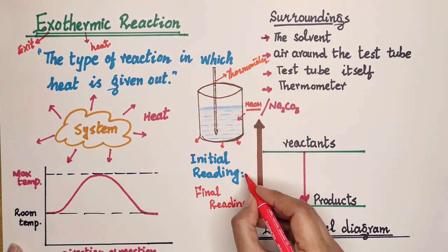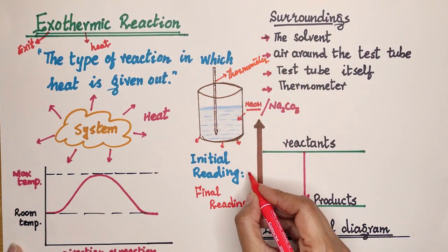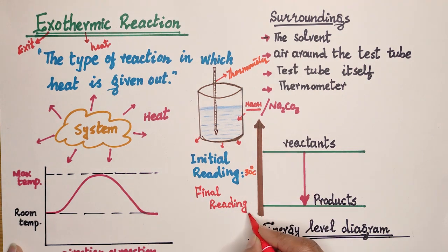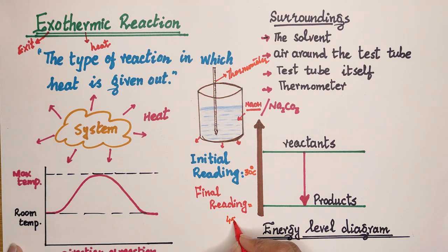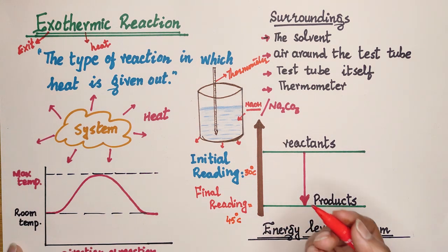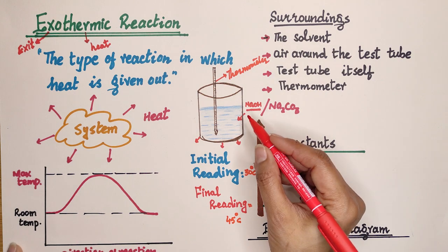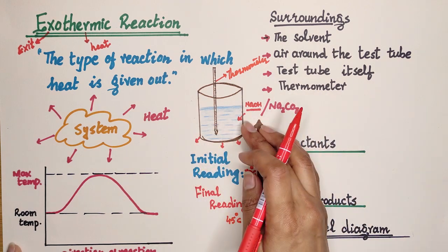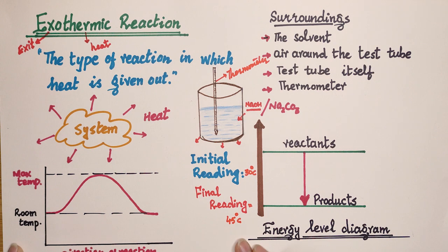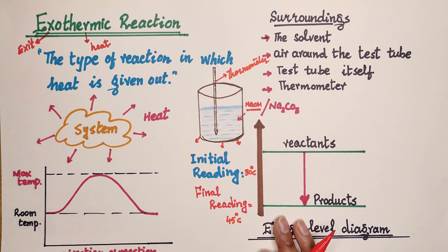The thermometer proves helpful in confirming the reaction is exothermic. For example, if the initial reading is 30°C and after the reaction it is 45°C, then the rise in temperature is 15°C. After looking at these readings, we can confirm that this reaction is exothermic.